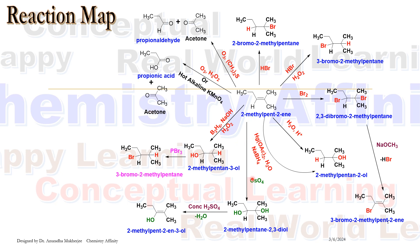Next reaction is treating this alkene with osmium tetroxide. Here two OH groups are attached to the alkene double bond. So we are getting 2-methyl pentane-2,3-diol.